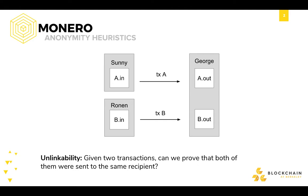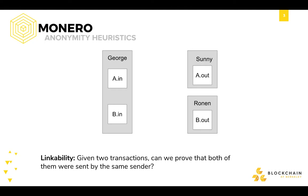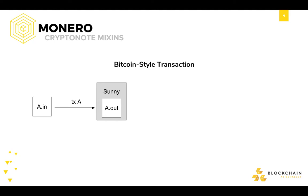The second feature is linkability — this is the core feature the paper essentially talks about. The paper is called 'Empirical Analysis of Linkability.' Linkability asks: assuming George sent out two transactions to Sunny and Ronan, can we prove they came from George? This is very common in Bitcoin. Bitcoin is not anonymous — if you send a transaction, you can trace it back. But Monero is supposed to solve that issue. If Sunny received a transaction and then spent it, you can go back and see that Sunny was the one who sent it. That's how Bitcoin works.